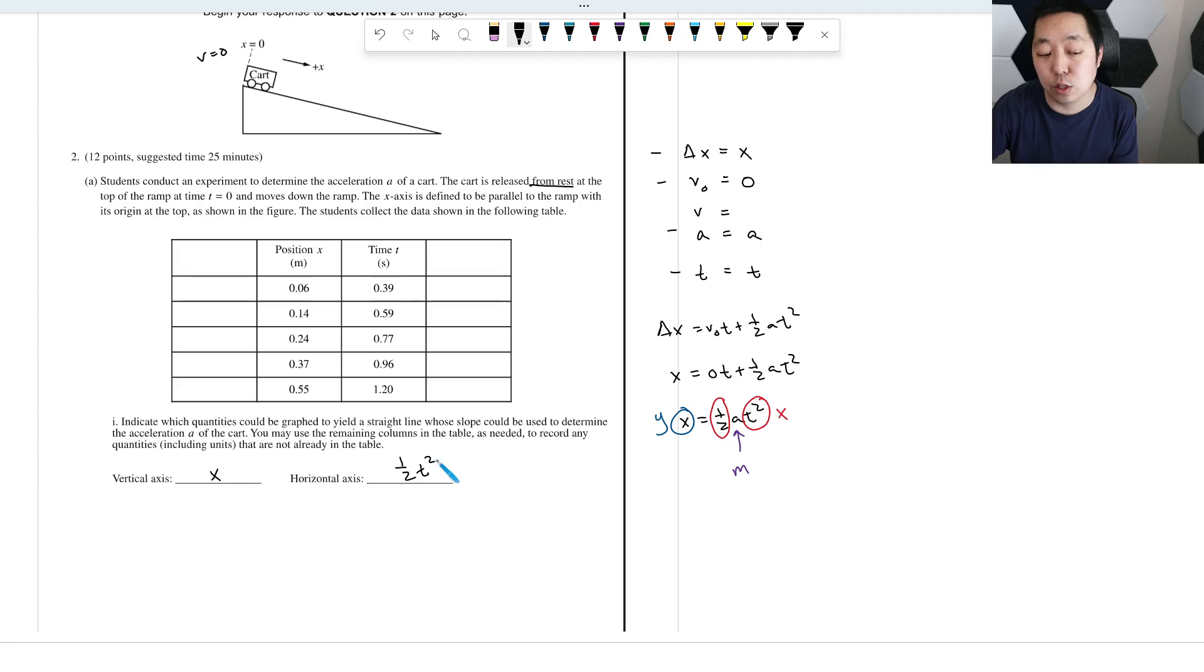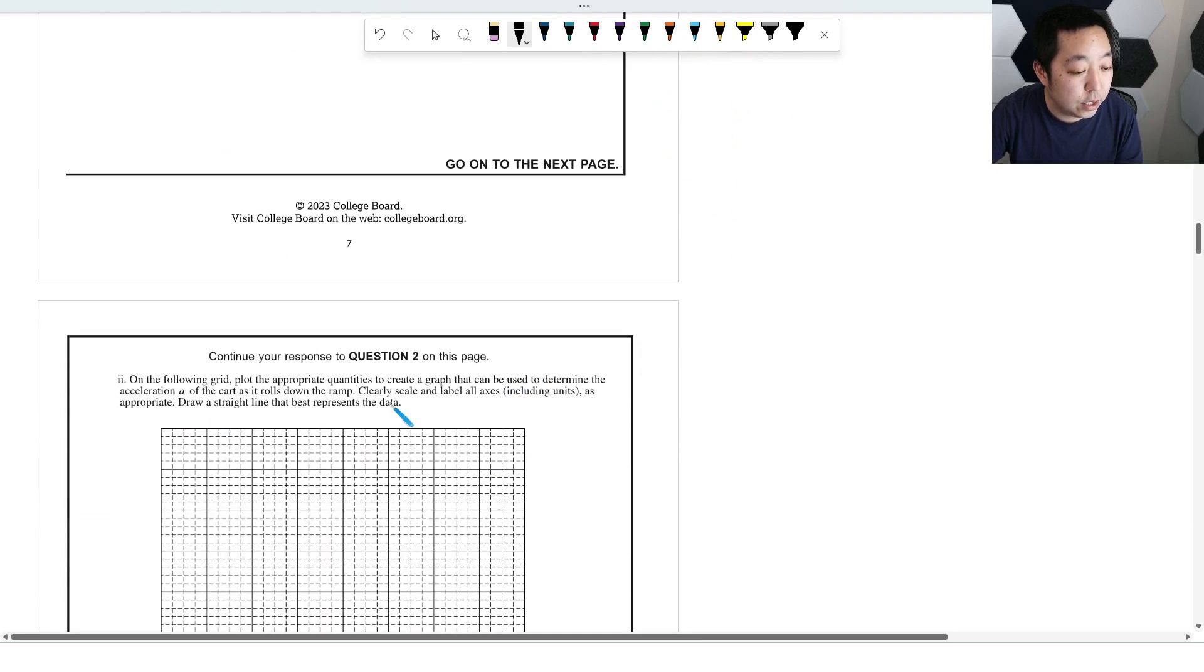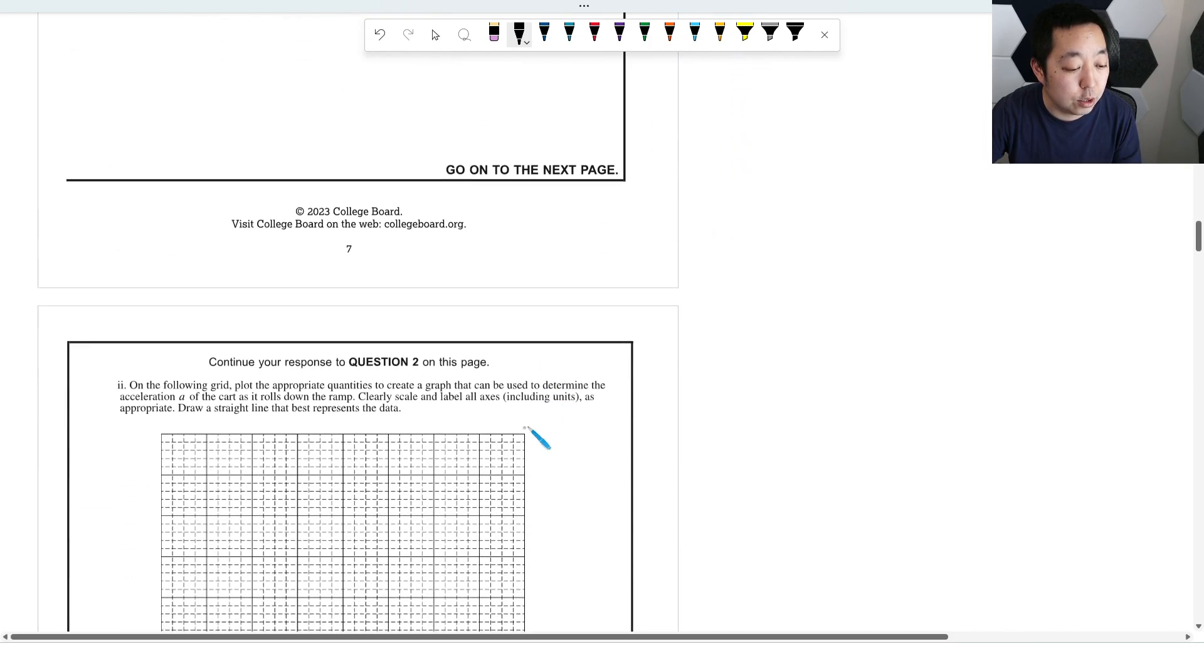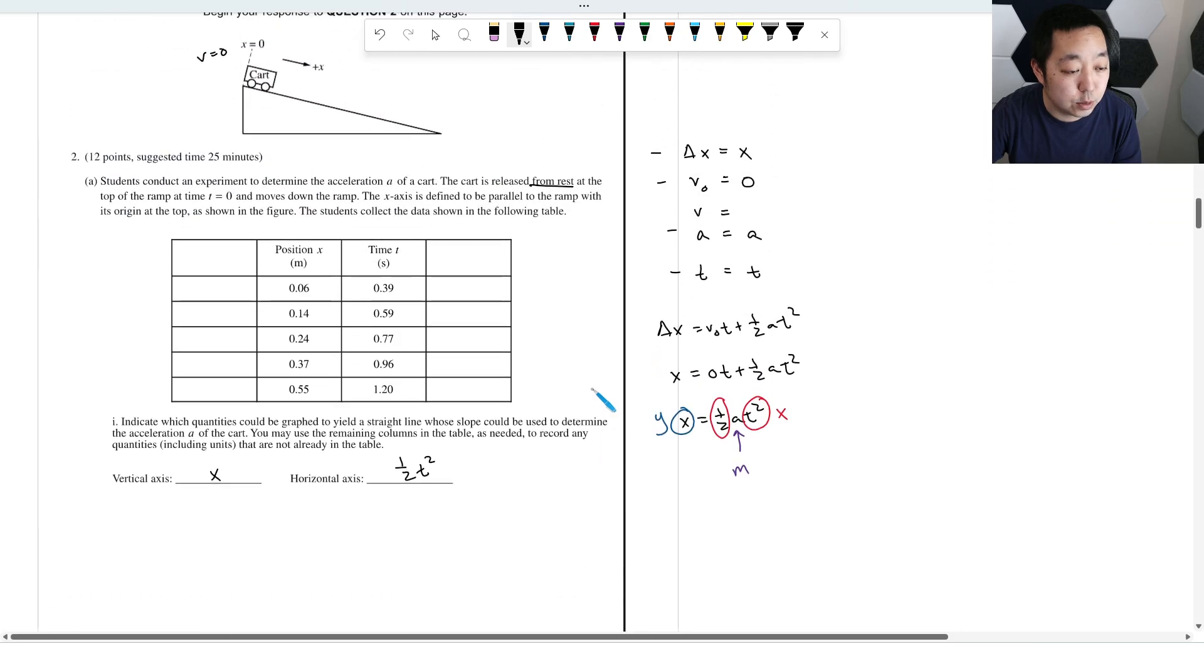Now, if you did t squared, then your slope would be one half a. But you probably have to have something with t squared. There's a lot of different ways you could do it. But as long as it's something like that, that is fine. On the grid, plot the appropriate quantities to create a graph, including units. You got to label the graphs, you got to label the units, be careful on that one.